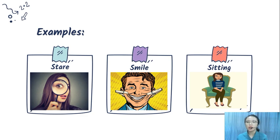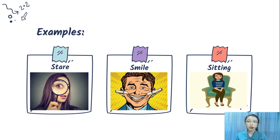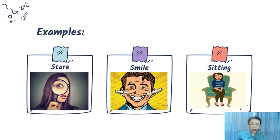Sitting posture is also non-verbal. For example, if you sit upright in a proper way, it shows respect and formality. But if you lean back with your feet up, it might mean you are bored or don't care. So sitting posture carries meaning.